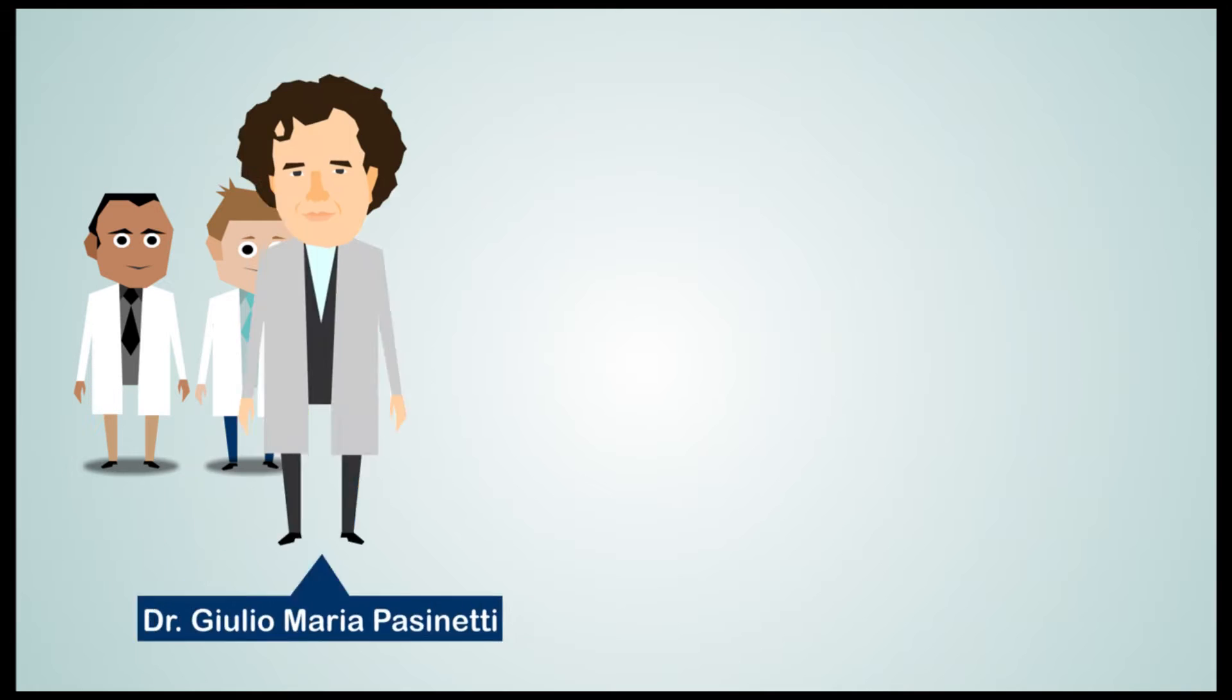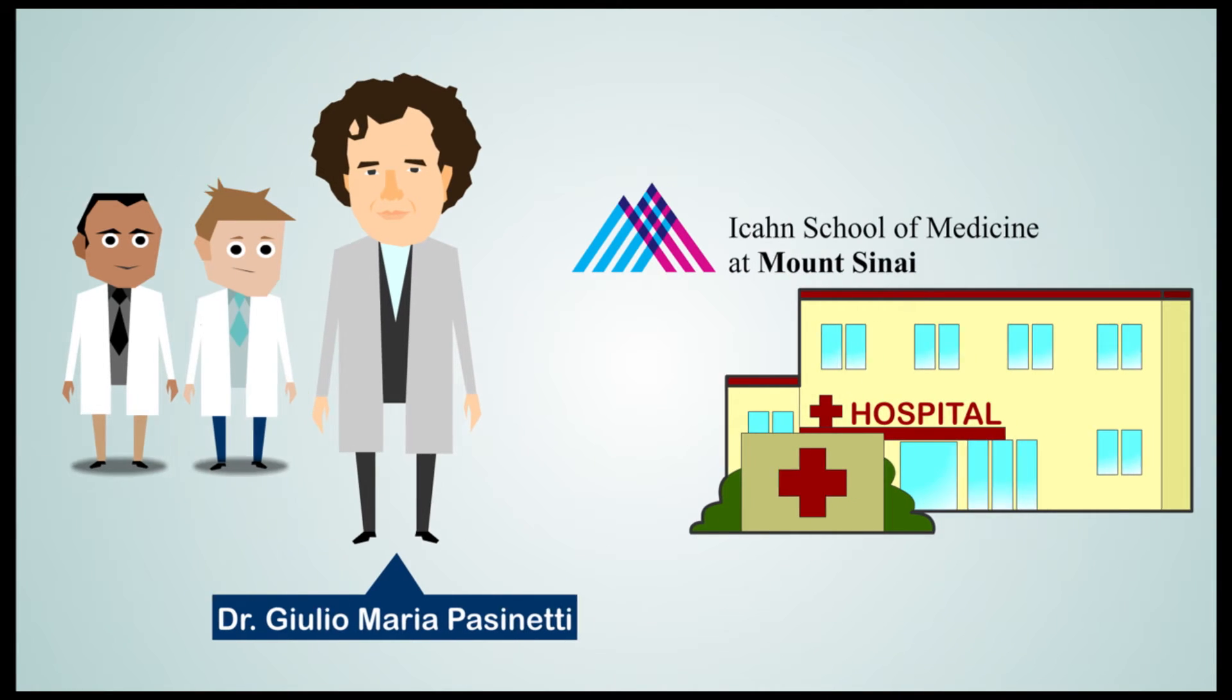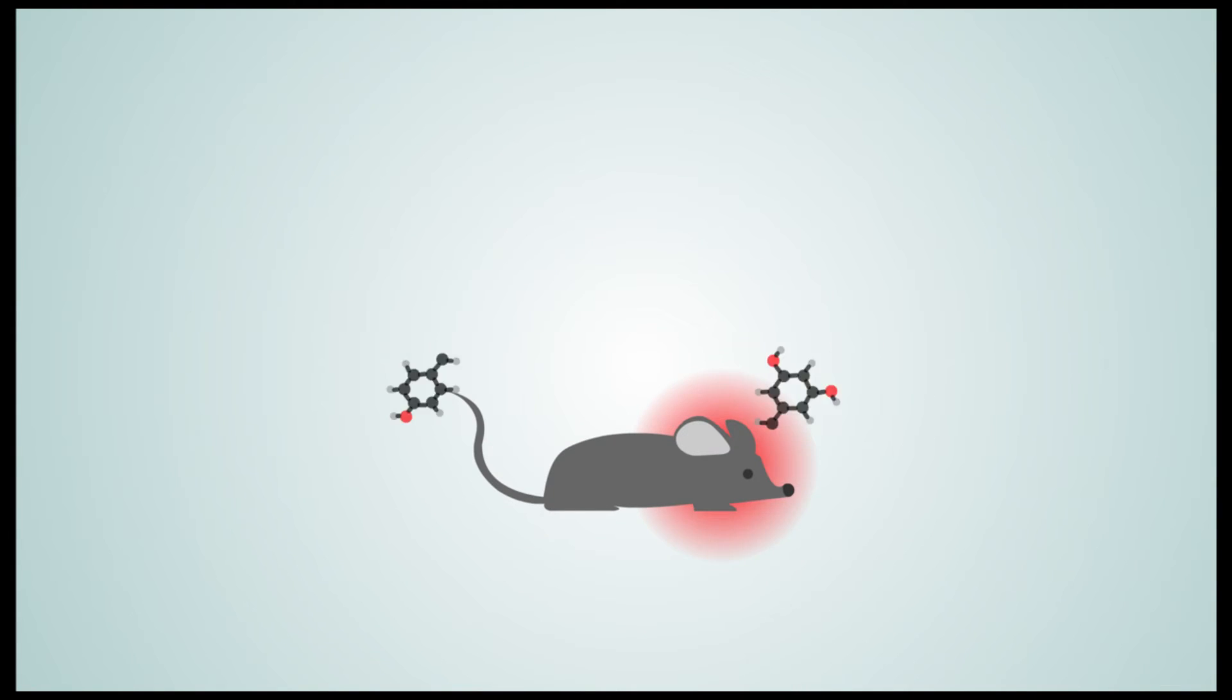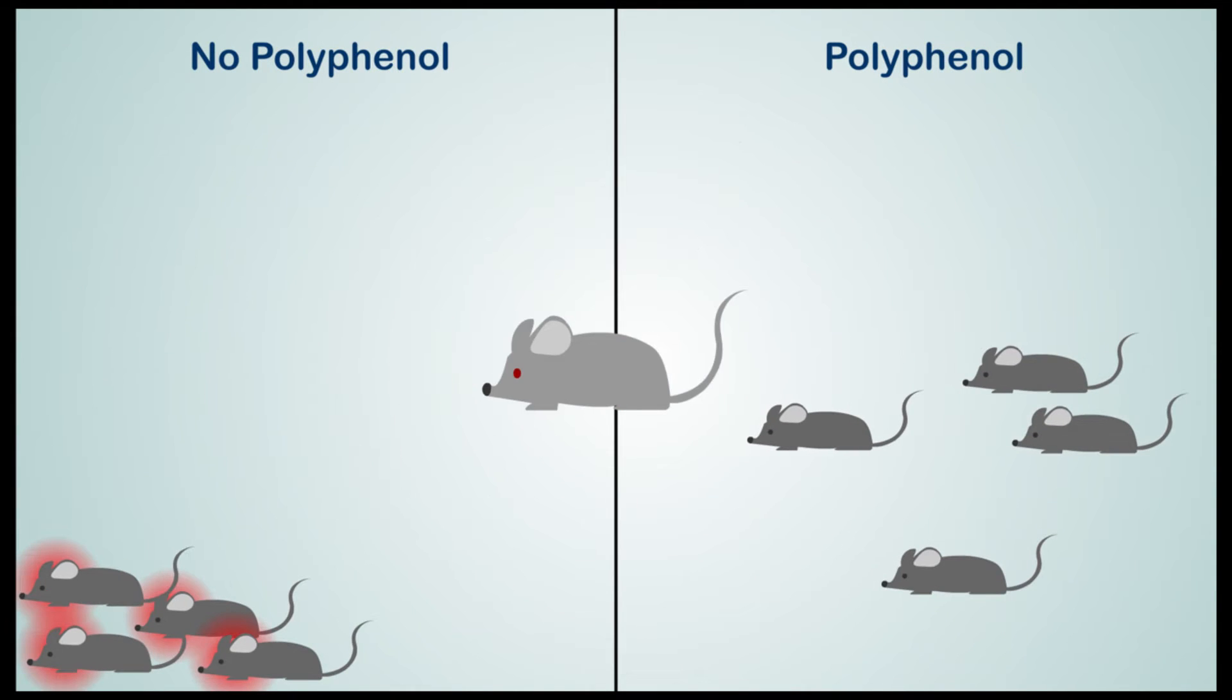A research team led by Dr. Giulio Maria Passanetti from the Icahn School of Medicine at Mount Sinai recently identified two key polyphenol metabolites that reduced anxiety and depression in mice, making them significantly more resilient to interactions with aggressor mice.